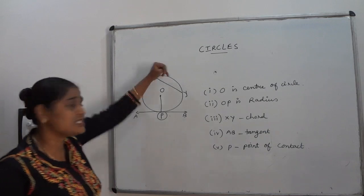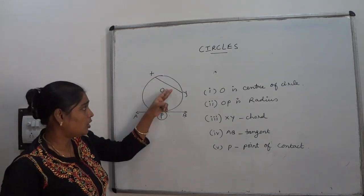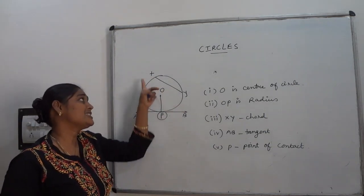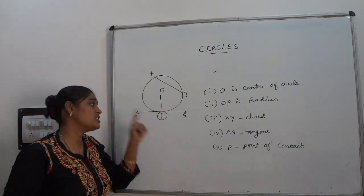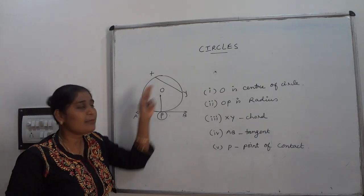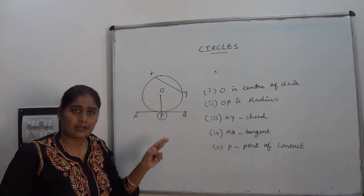The only difference between tangent and chord is: chord is a line that intersects the circle at two points. Tangent means a line which touches the circle at a single point. That is the main difference between chord and tangent.